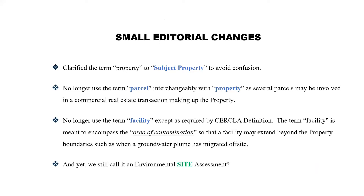There are a number of small editorial changes. Probably the most significant is we've incorporated the term 'subject property' now. If you reviewed prior phase one standards, you'll notice we were all over the place — sometimes calling it a parcel, a property, a subject property, or even a facility, and it was confusing. We've cleaned all that up and you'll just see the term 'subject property,' meaning the property you are actually doing your phase one on. We decided to keep the title 'Environmental Site Assessment' because it's been commonly used in the industry.